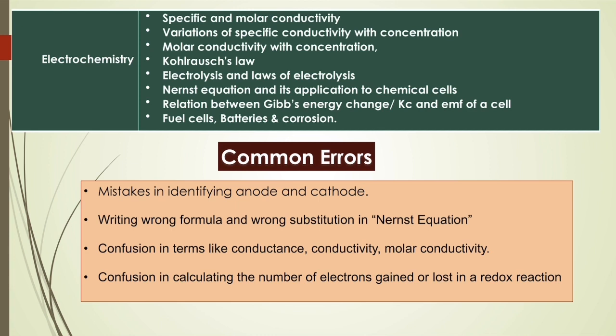Coming to the error part in Electrochemistry: students often commit mistakes in identifying anode and cathode, so that has to be learned properly. The Nernst equation is generally written incorrectly, and accordingly the substitution also goes wrong. Students have confusion in the terms conductance, conductivity, and molar conductivity — definitions and proper equations should be learned. They also make mistakes in calculating the number of electrons gained or lost in a redox reaction, which causes the numerical answer to go wrong.